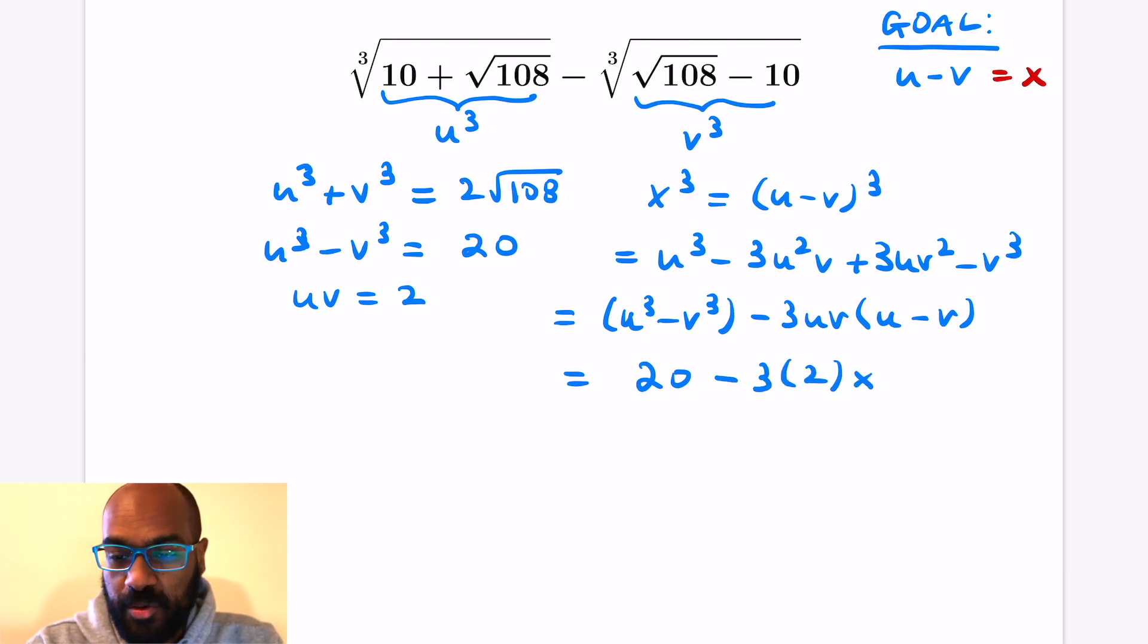So u minus v is x. What we have here then is this value x, which is u minus v, is actually a solution to a cubic equation. It's the cubic equation x cubed plus 6x minus 20 is 0. If you can figure out the solutions to this cubic equation, that'll help us find out what x is. And we're looking for a real value here.